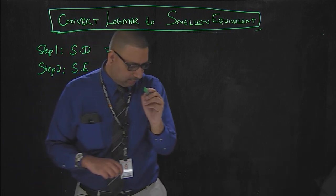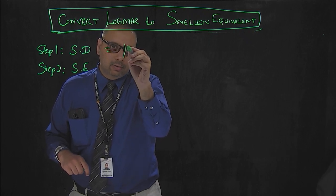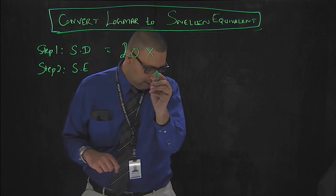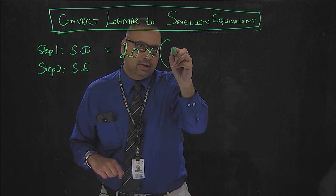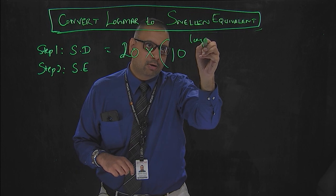Snellen denominator can be easily calculated by multiplying 20 into the 10 to the power, this is anti-log, 10 to the power log MAR value.